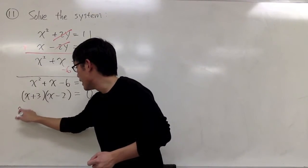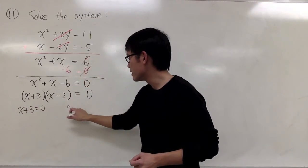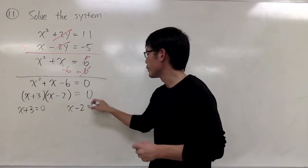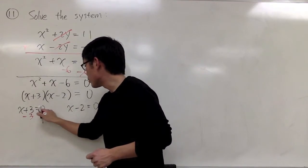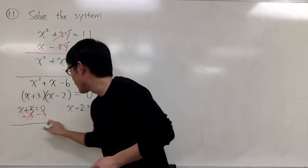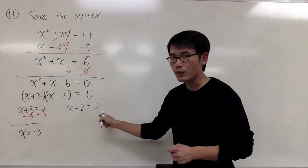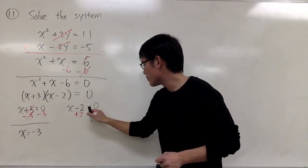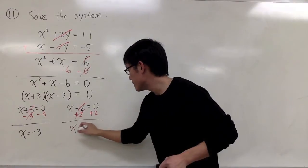From the first parentheses, x + 3 = 0. The second parentheses, x - 2 = 0. So for the first one, after I add minus 3 on both sides, we have x = -3. For the second one, plus 2 on both sides, we will get x = 2.